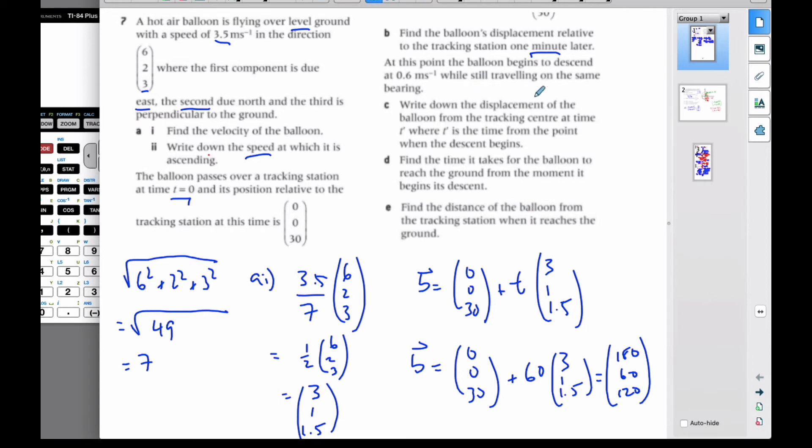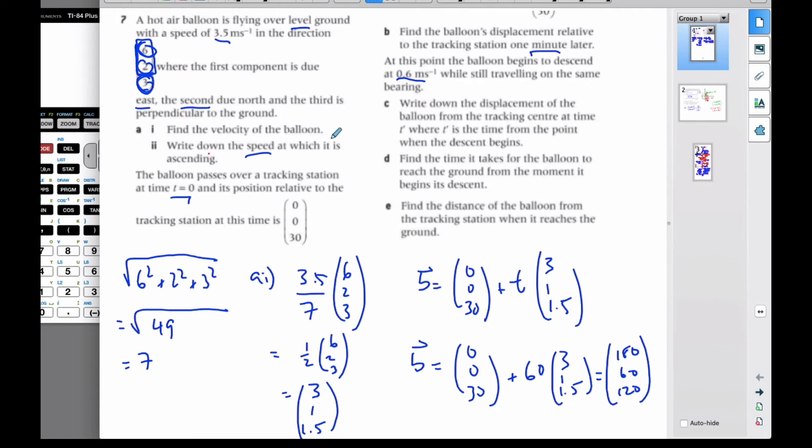At this point, the balloon begins to descend at this particular speed, but still traveling in the same bearing. The components are east, north, and up. The north and east components, which make up the bearing, are not changing. The only thing changing is the up or down component.